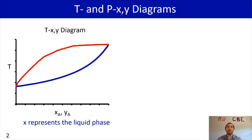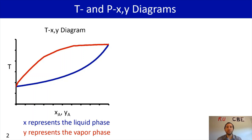As a reminder, your x represents the mole fraction of the liquid phase, your y represents the mole fraction of the vapor phase. The diagram is going to represent regions where you have liquid, regions where you have vapor, and then regions where you're going to have a liquid-vapor mixture.